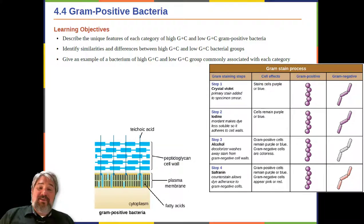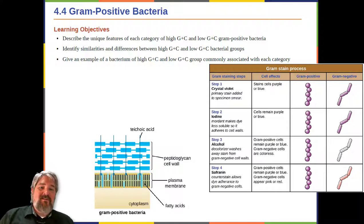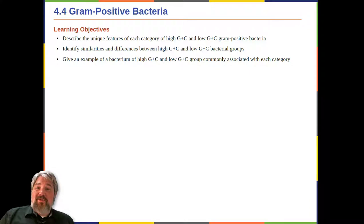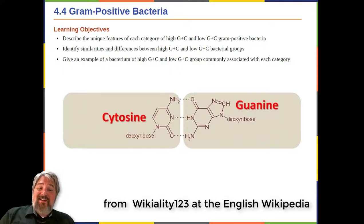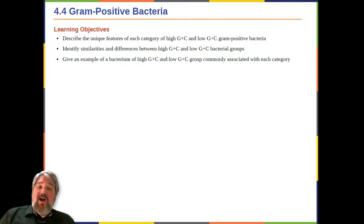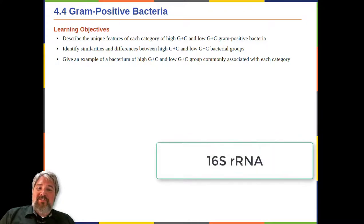For many years, the retention of Gram-stain was one of the main criteria used to classify prokaryotes, even though some prokaryotes did not readily stain with either the primary or secondary stains used in the Gram-stain procedure. Advances in nucleic acid biochemistry have revealed additional characteristics, namely the guanine to cytosine ratios (GC) in DNA, and the composition of 16S ribosomal RNA subunits.